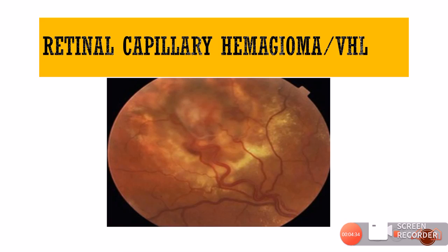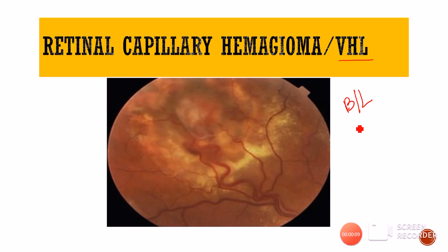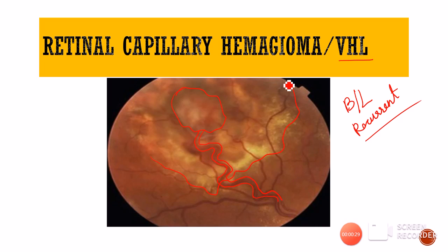Another condition with sub-retinal exudation is retinal capillary hemangioma, particularly associated with VHL disease — von Hippel-Lindau disease. Patients with VHL typically have bilateral retinal capillary hemangiomas, often recurrent and sometimes multiple. You can see a pinkish-reddish lesion with a dilated feeder vessel going toward it. Surrounding the hemangioma is yellowish exudation — the chronic leakage from the lesion causes collection of lipoprotenaceous material as sub-retinal exudates.